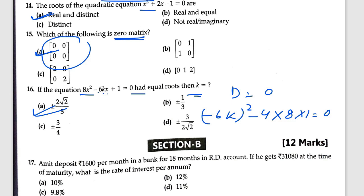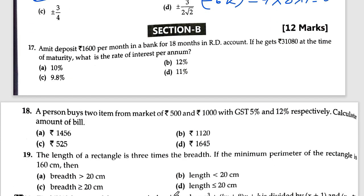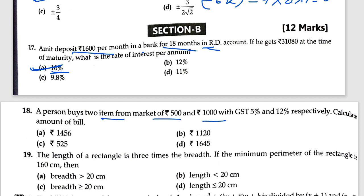Question 18: commercial mathematics — deposited 1,600 rupees per month for 18 months in a recurring deposit. The correct option is A. Question 19: a person buys two items with GST of 5% and 12% respectively.